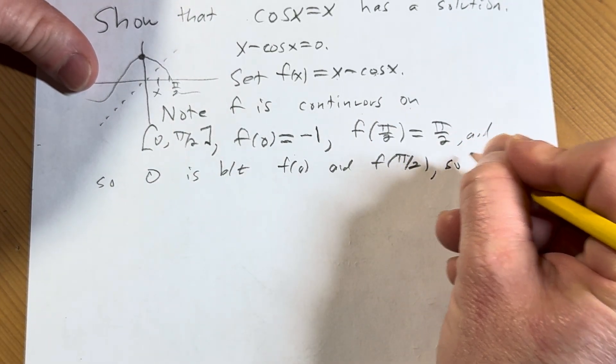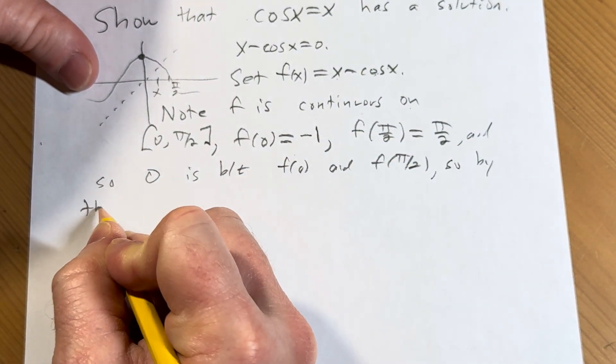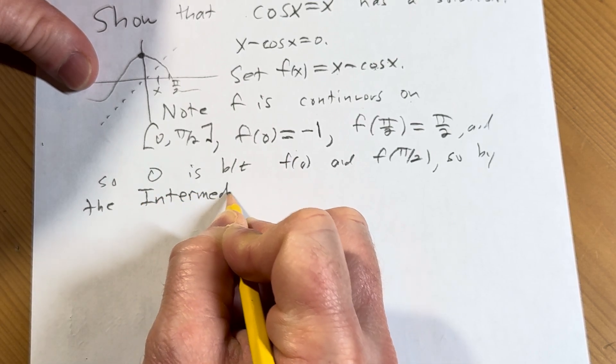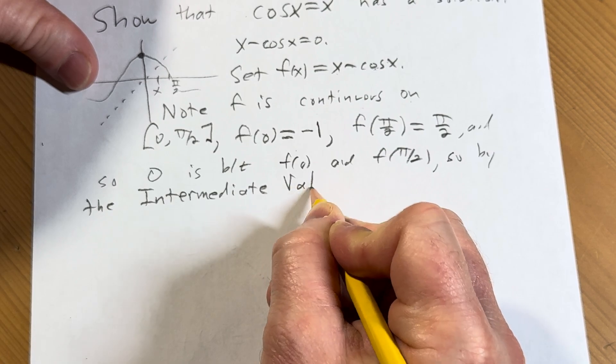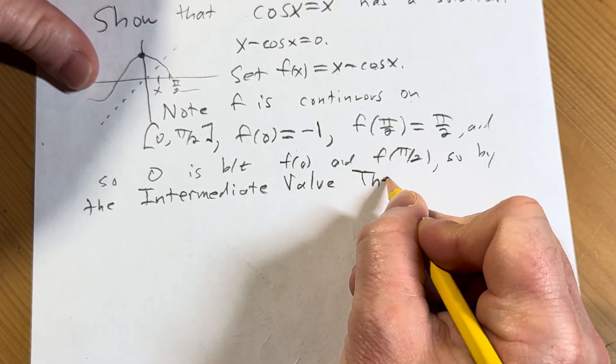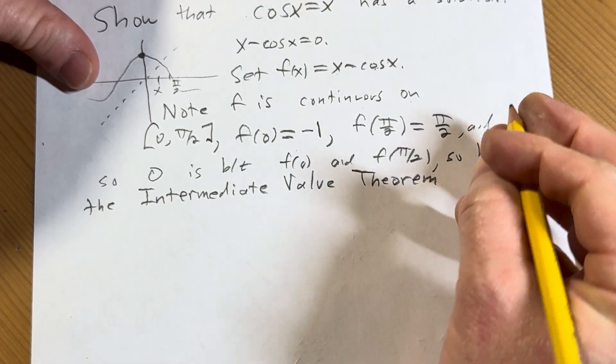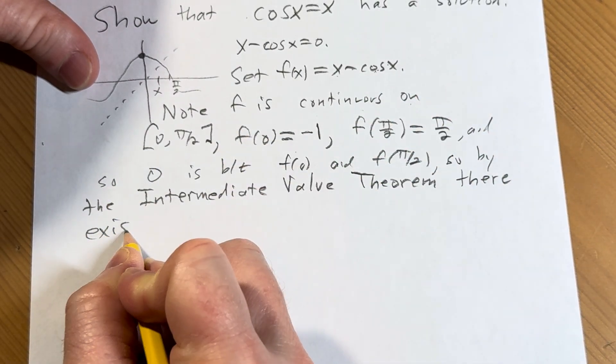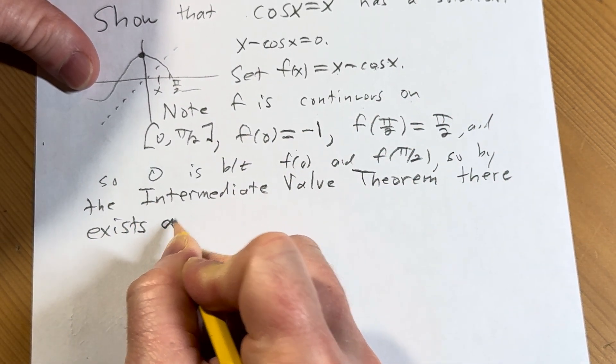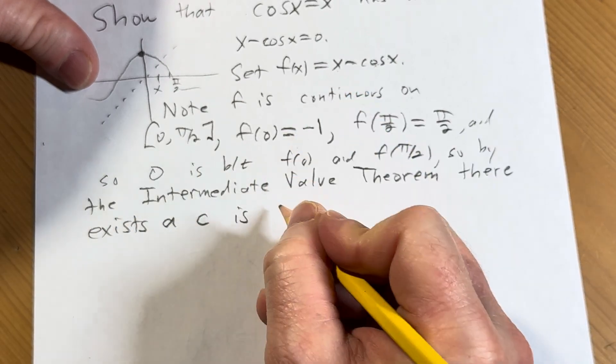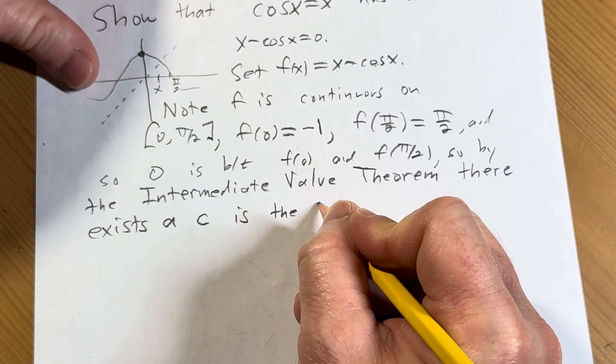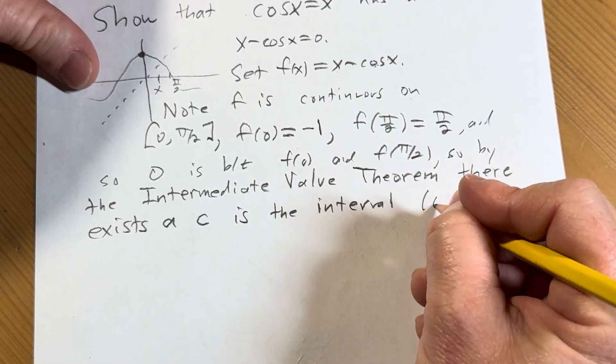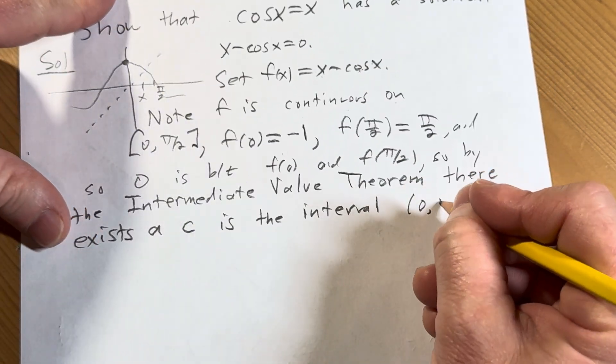So by the intermediate value theorem, or just IVT, there exists, it tells us, a c in the open interval, which in this case is 0 to pi over 2.